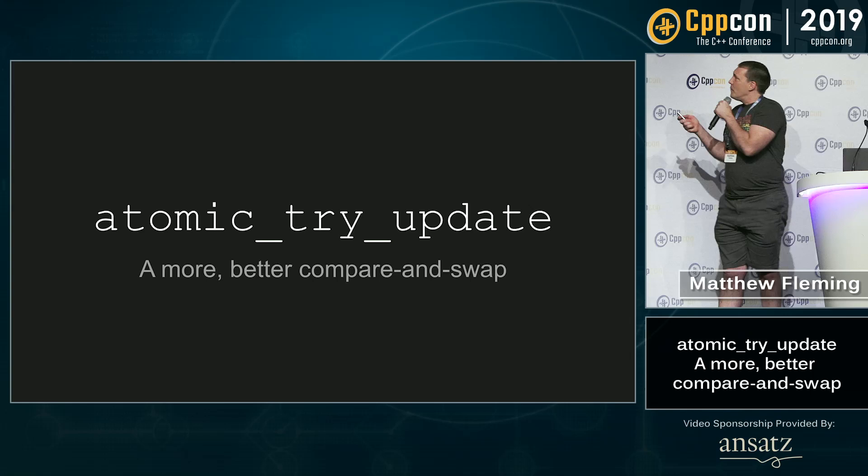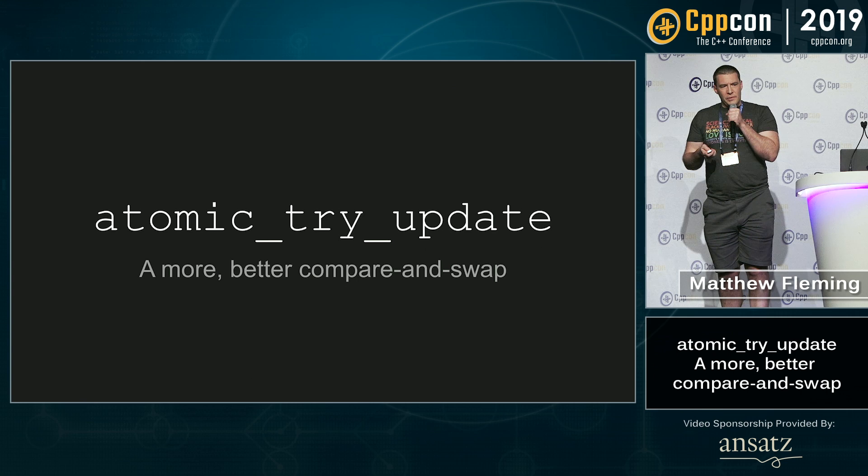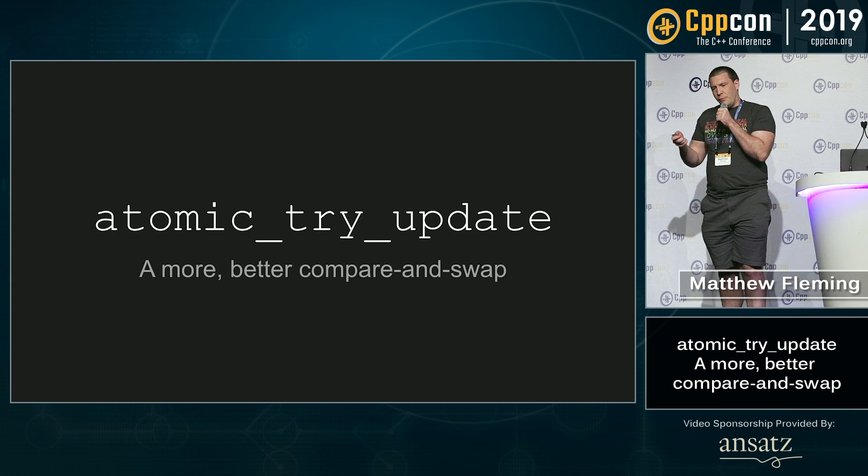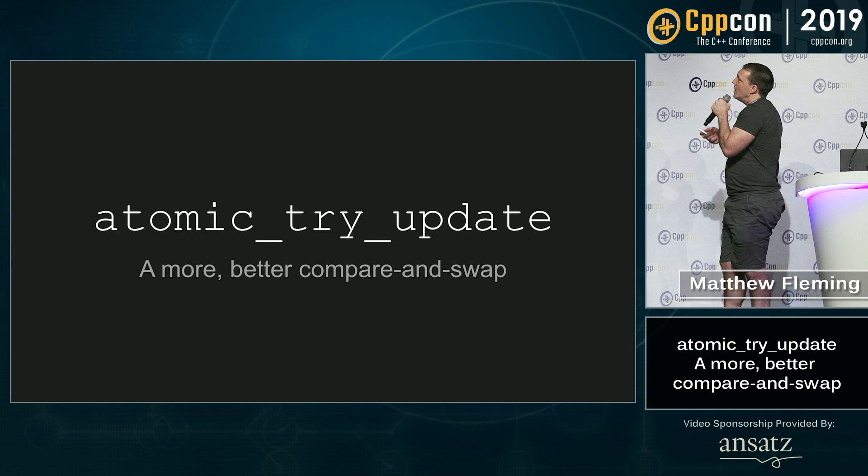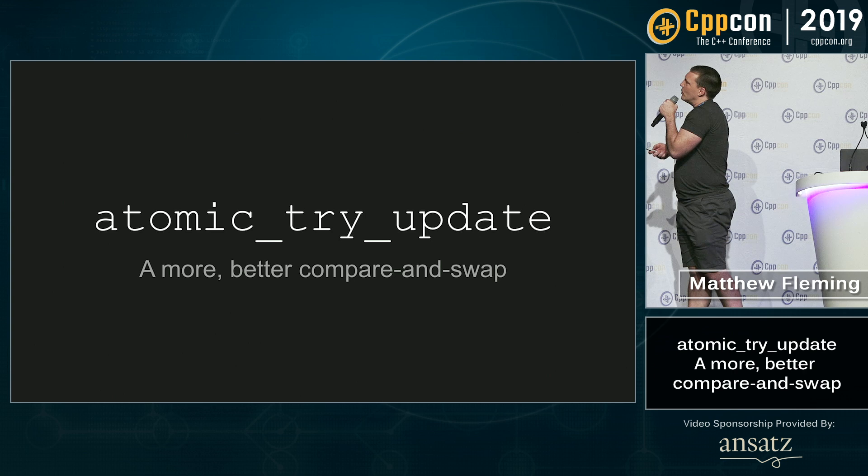In our code at work, we started pre-C++11. We did not have std::atomic, so we had our own sort of atomic library, and one of the functions we had was atomic_update and atomic_try_update, which I'll explain in a moment. They're not magic — they're kind of simple and stupid — but I feel like they make code easier to read, so that's the point of this.